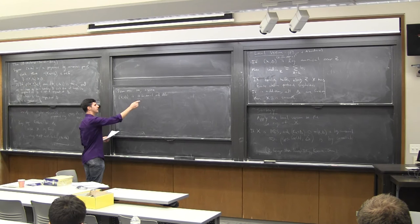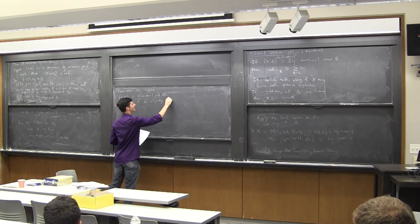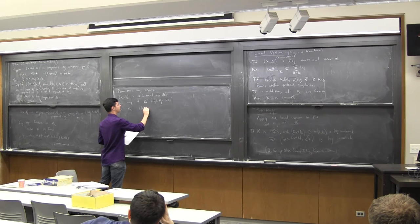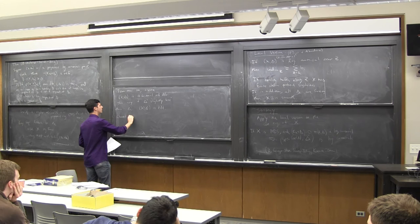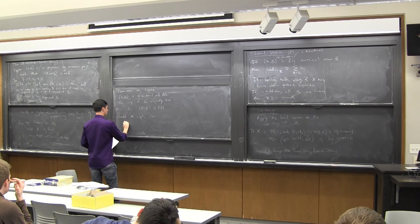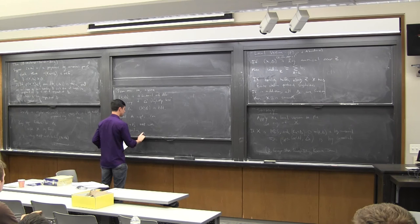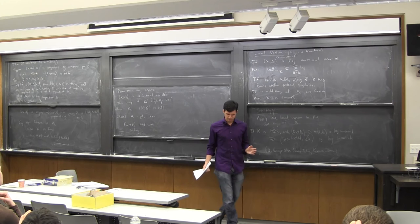From now on I want to make the assumption that (X, Δ) is Q-factorial and DLT — this is a more or less standard reduction step. The reason I want DLT is that if Δ' is slightly less than Δ, then (X, Δ') is KLT, and so this is what lets me run the minimal model program. I choose A ample and run the K_X + Δ' MMP with scaling. We know from BCHM that if this log canonical divisor is not pseudo-effective, this MMP will terminate in a Mori fiber space.